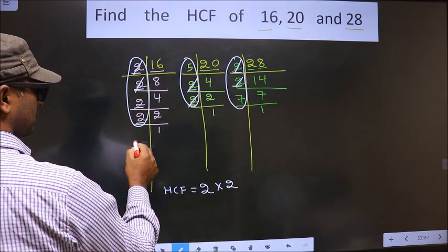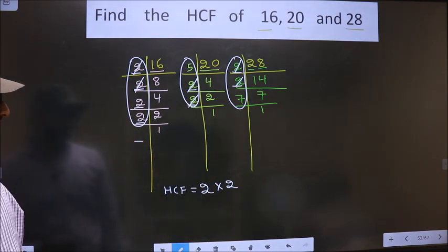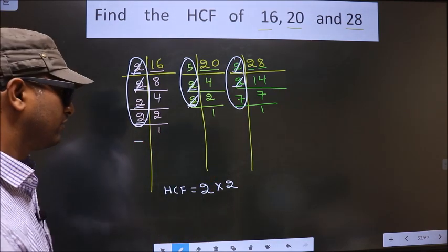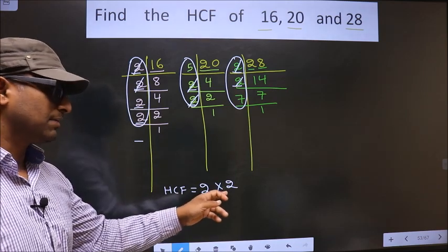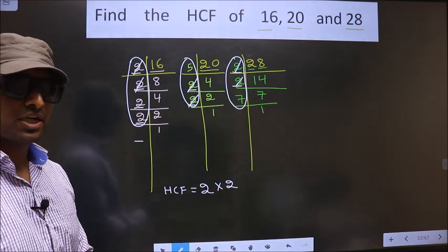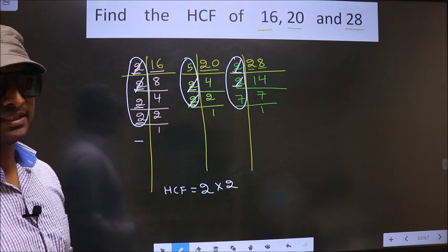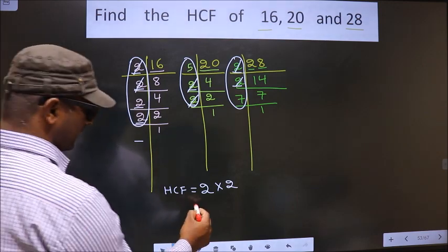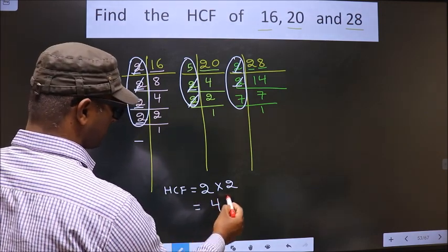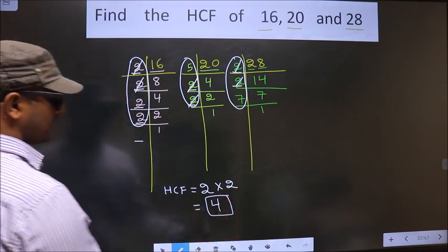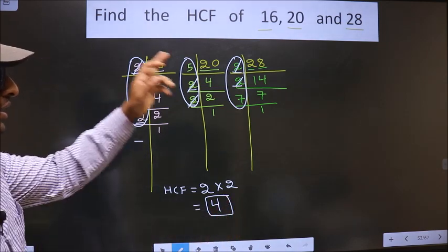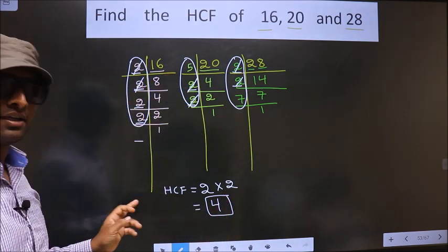No more numbers are left therefore now you multiply these numbers. Whatever number you get that is your HCF, so that is 2 times 2 is 4. So this is our HCF.